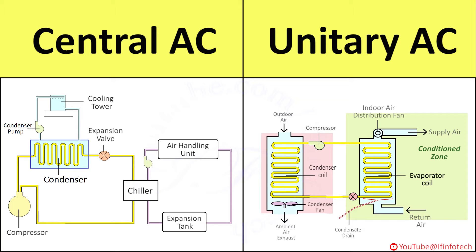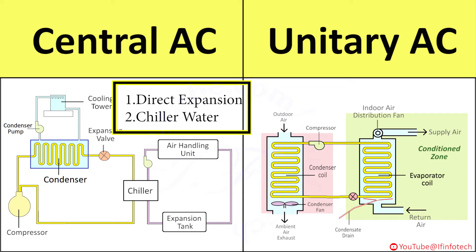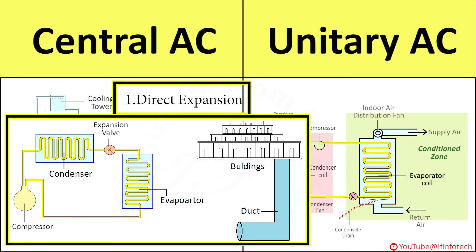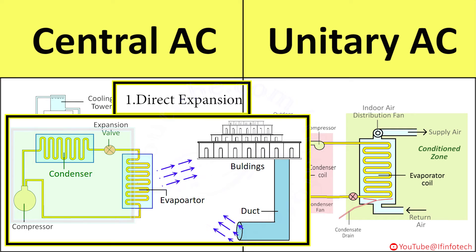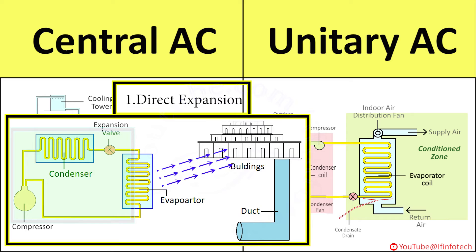Central AC systems are divided into two groups: the direct expansion system and the chilled water system, which is an indirect type. In the direct expansion system, air from the space to be air conditioned is circulated through a cooling coil, which is cooled by the refrigeration cycle. Liquid refrigerant at low pressure absorbs heat from the air and gets converted into vapor. Therefore, it is called a direct expansion system.